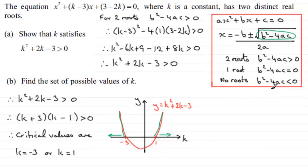So we can put that down, that we can say from the graph, y is greater than 0 when k is less than minus 3, or k is greater than 1. And that's our set of possible values of k.